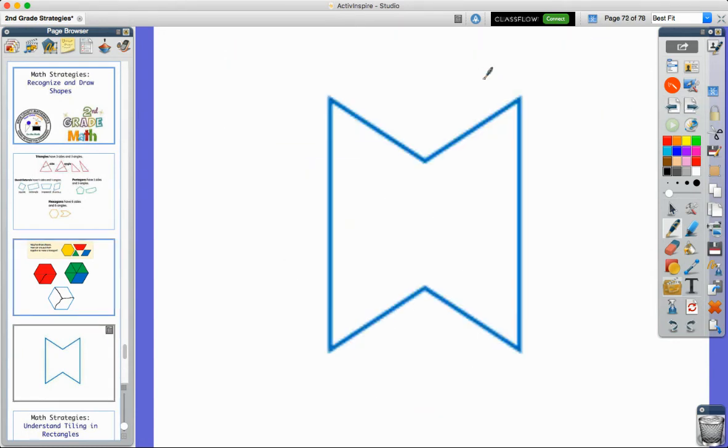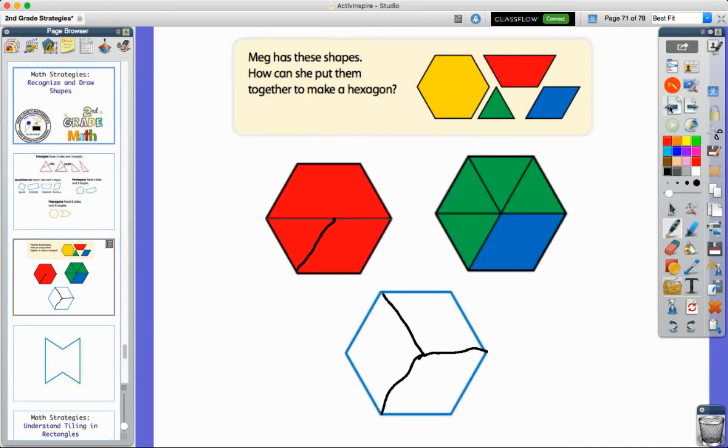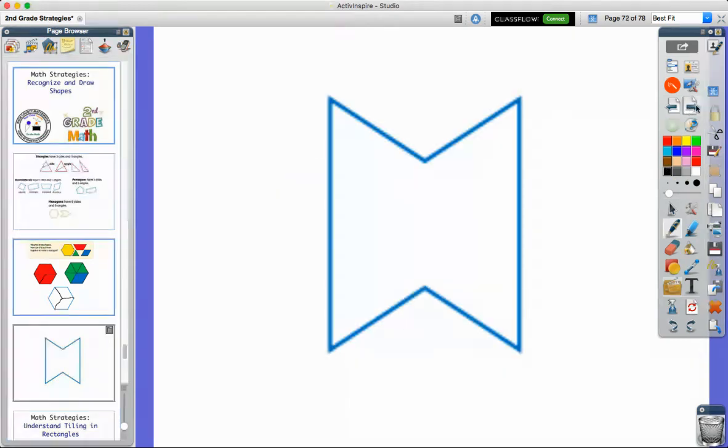For instance, this one - kind of a weird-looking shape. Let's think about it. It's one, two, three, four, five, six different sides, and one, two, three, four, five, six different angles. Even though it doesn't look like the hexagon we were looking at over here - that yellow figure - it's still a hexagon. You could take a lot of the same shapes we were using on the previous screen to make this one.